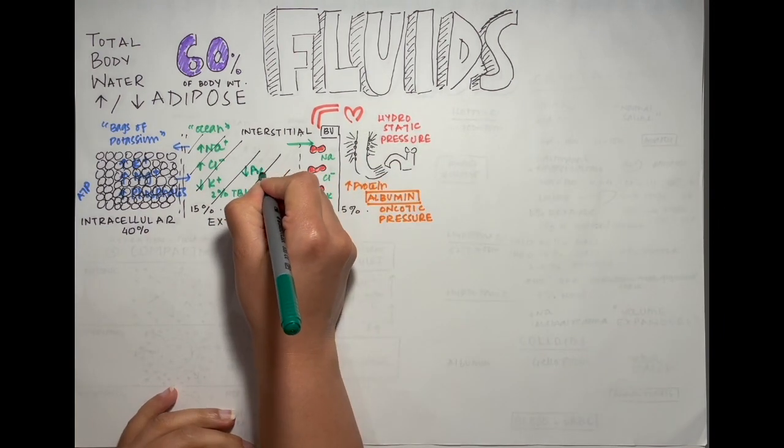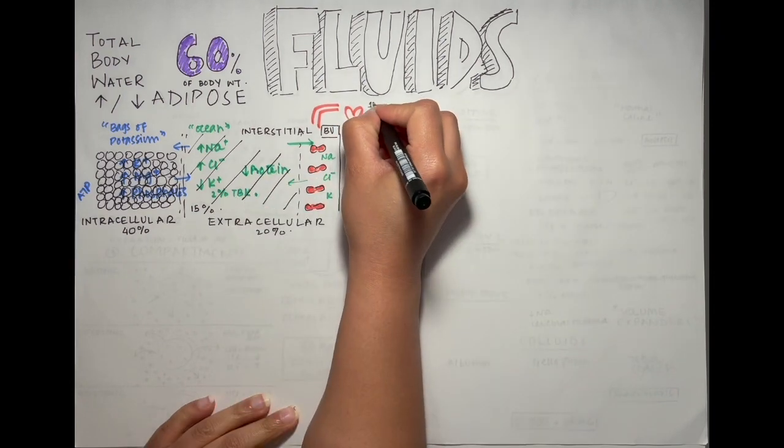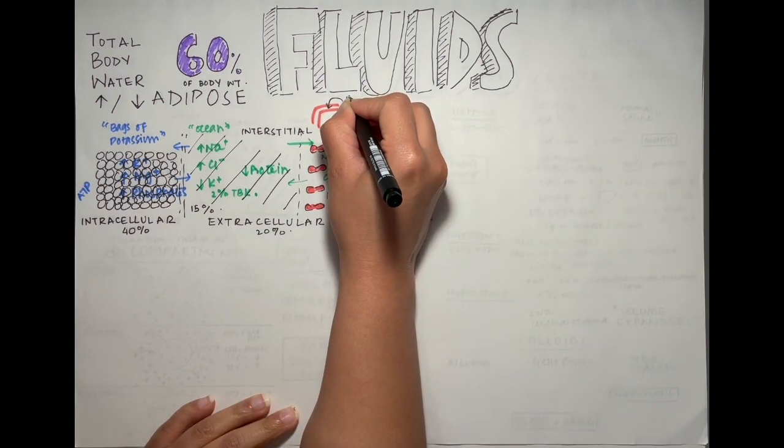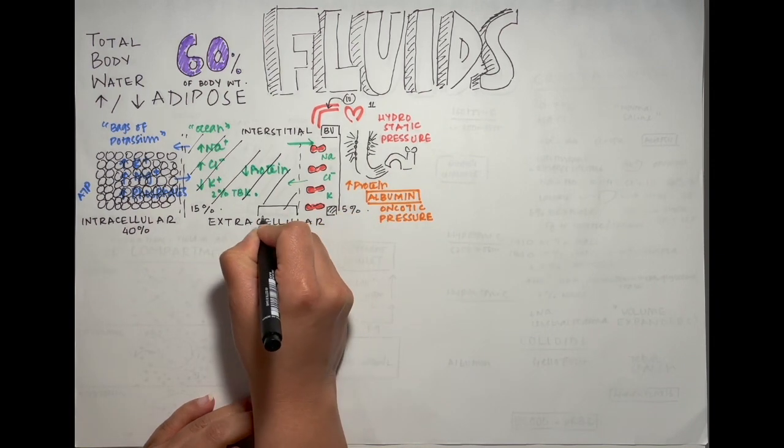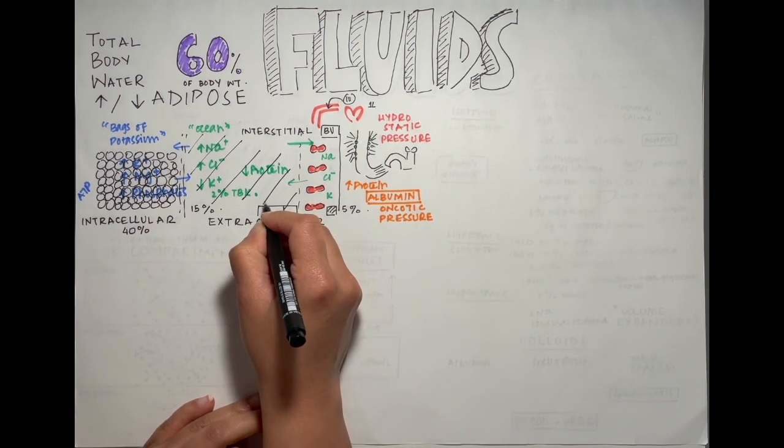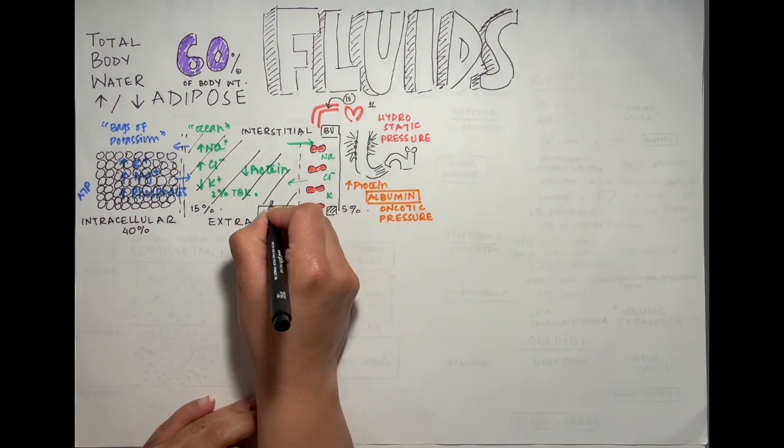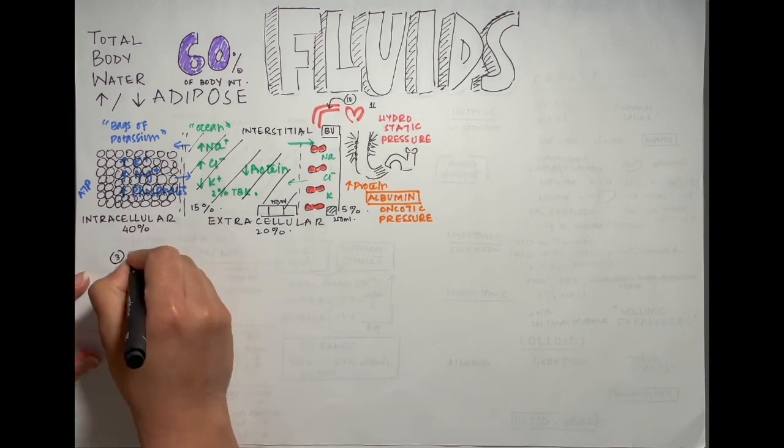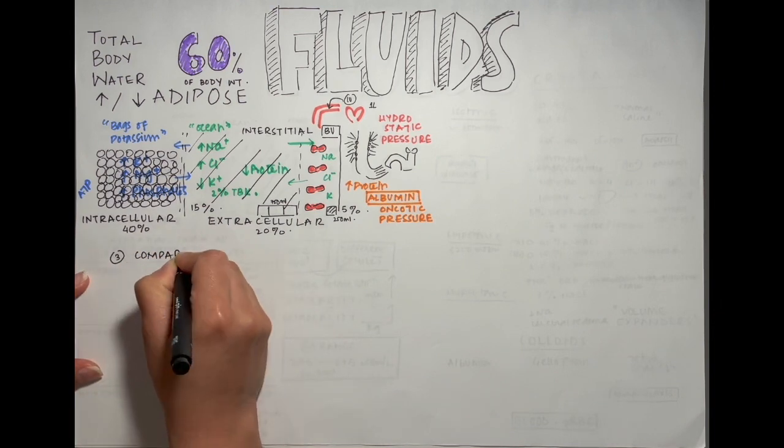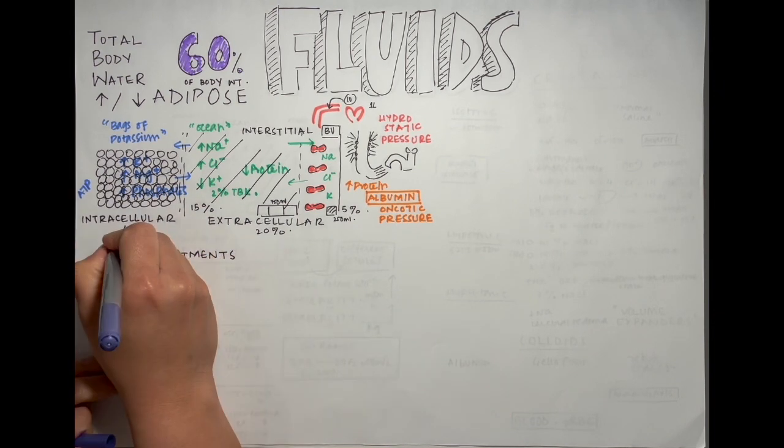When we give a liter of saline through the vein, what happens is because the interstitium is so large it will get most of that water, so it'll get 750 mils out of that one liter and only 250 will stay in the blood, and that's proportional to the size of these fluid compartments.